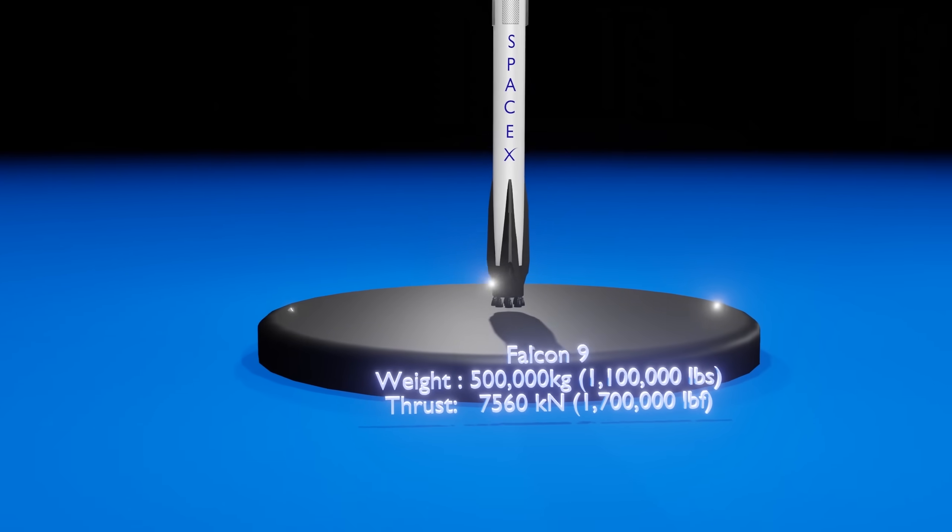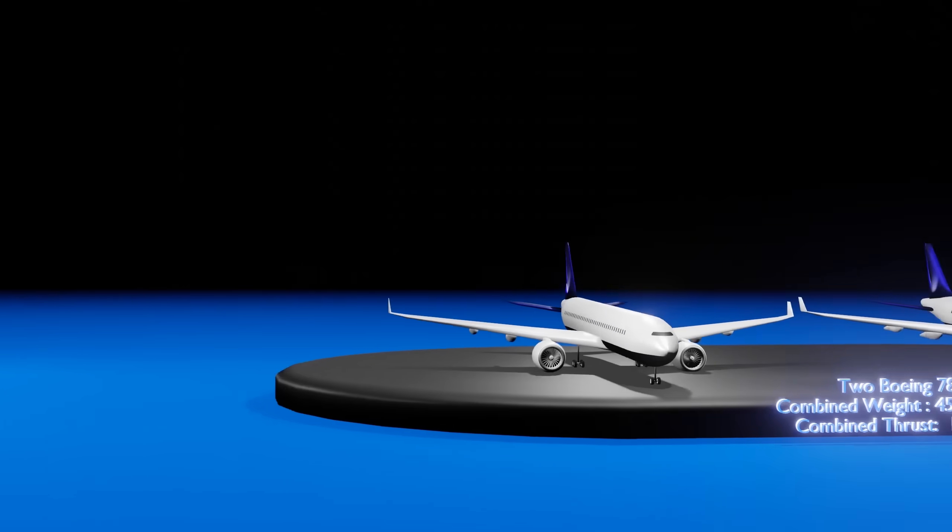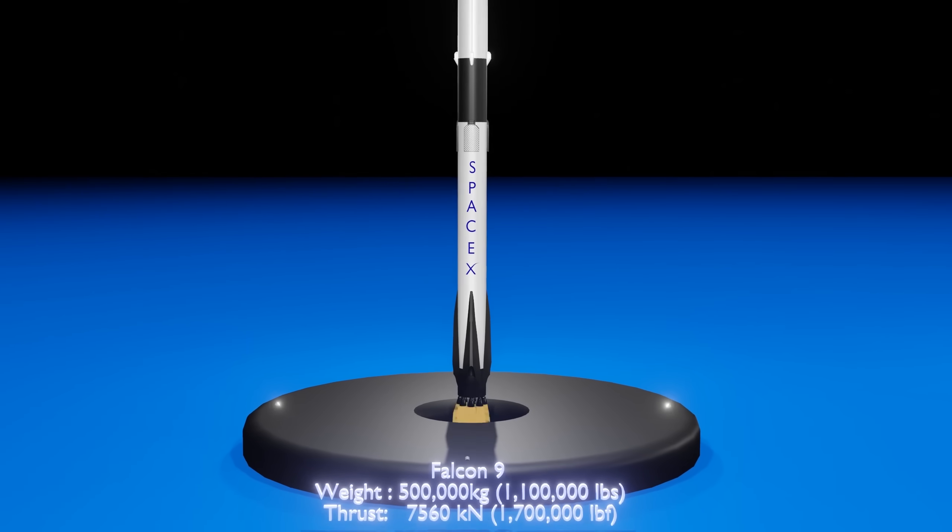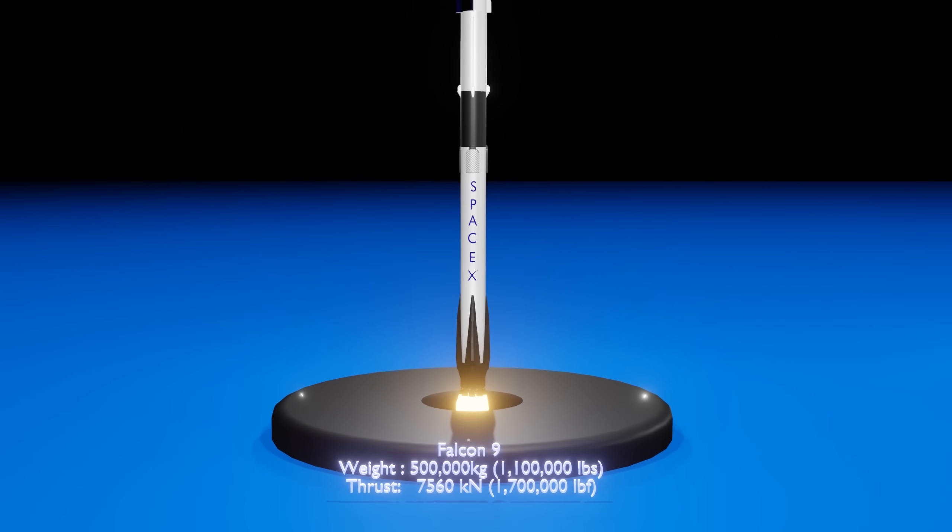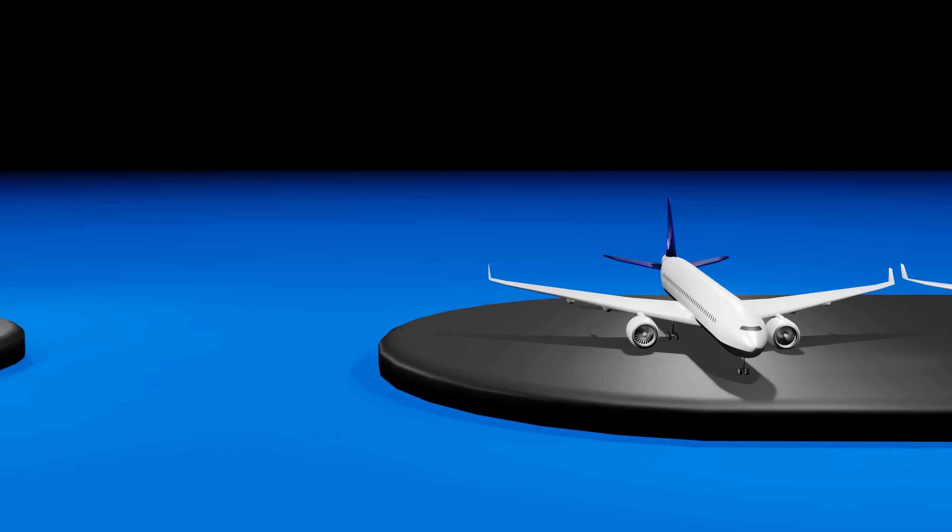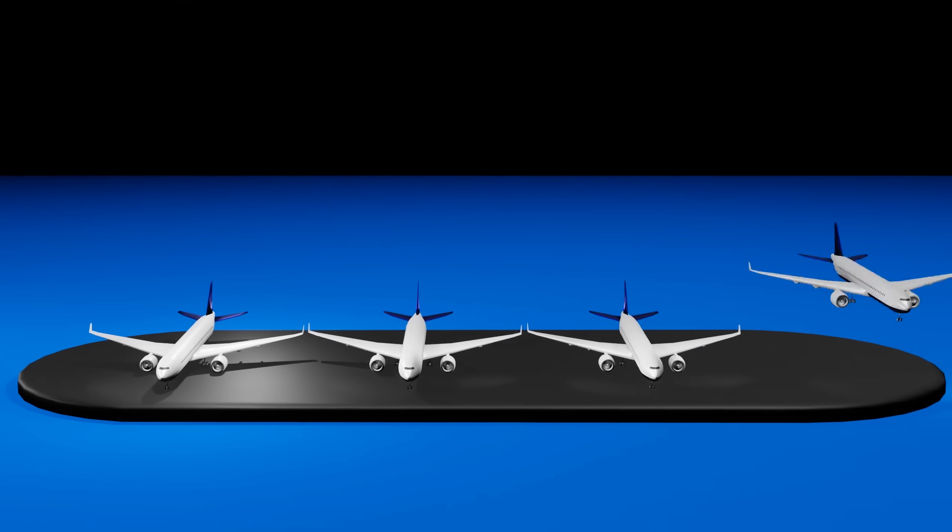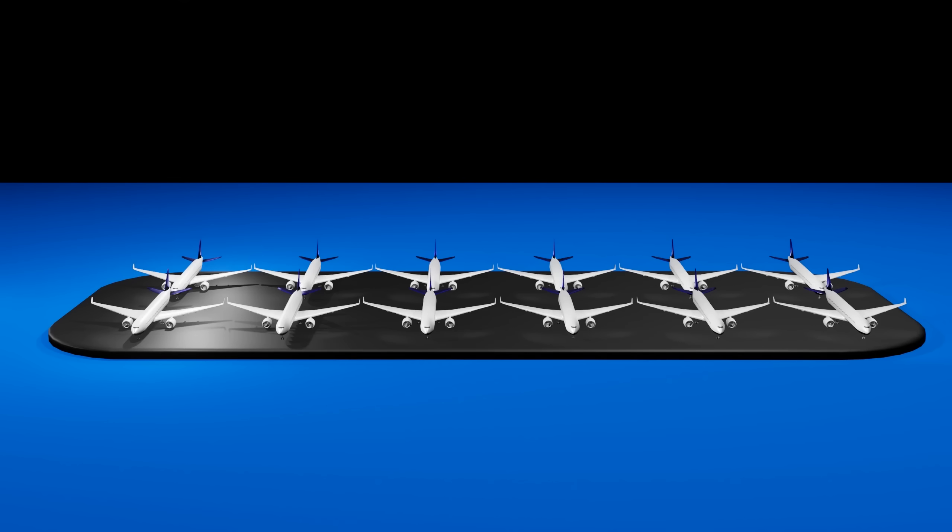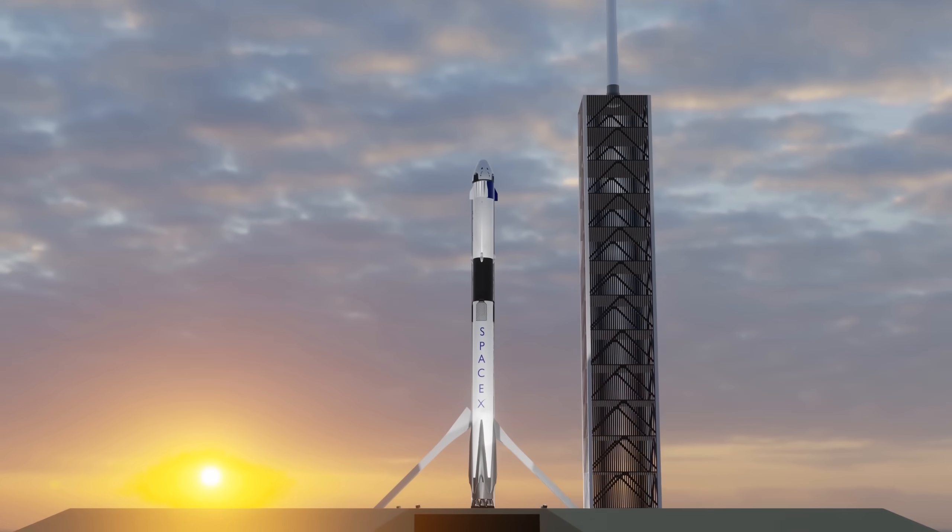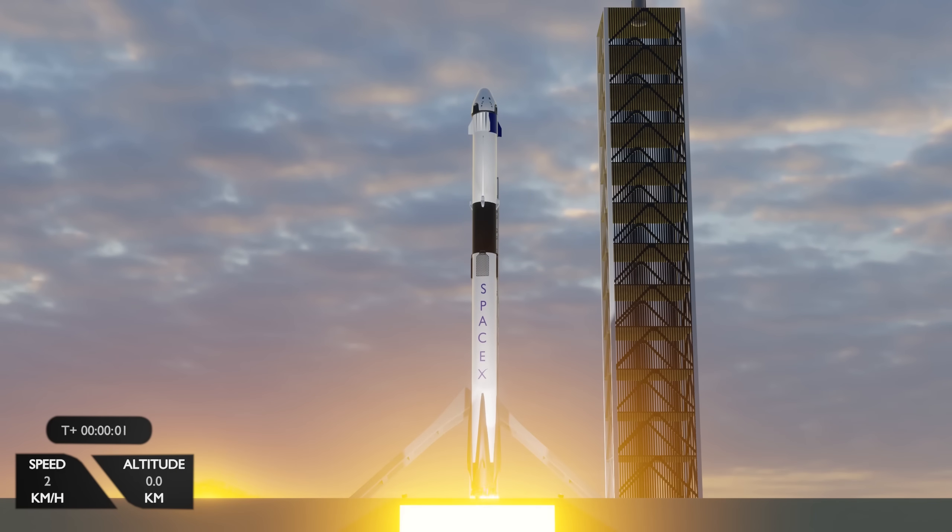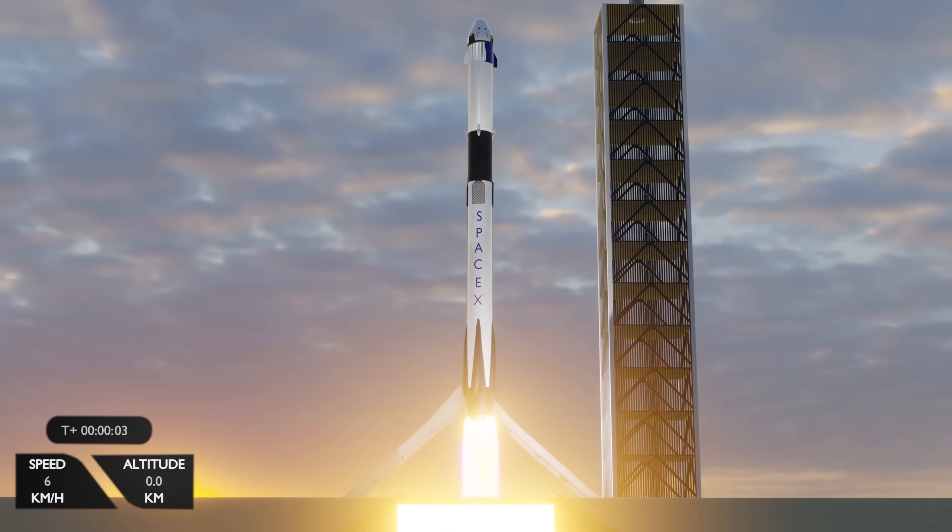A Falcon 9 fully fueled weighs more than two 787 passenger jets at 500,000 kg or 1.1 million pounds. The 9 Merlin engines on the first stage at full thrust provide 7,560 kN or 1.7 million pounds of thrust. This equates to roughly 12 Boeing 787 jets at takeoff. Vertical on the launch pad, once the countdown reaches T-0, the Falcon 9 ignites its engines and the rocket begins its ascent to outer space.